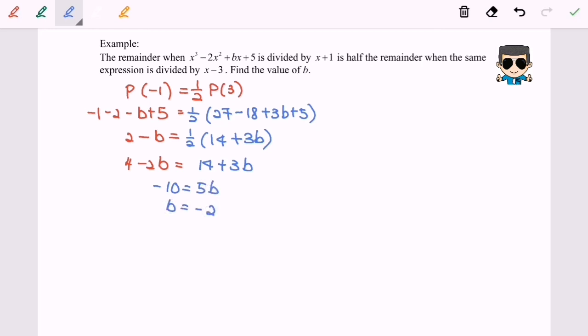So as usual, we are going to substitute the value of b into the expression. So P(x) will be equal to x³ - 2x² - 2x + 5.